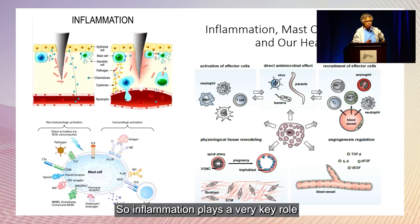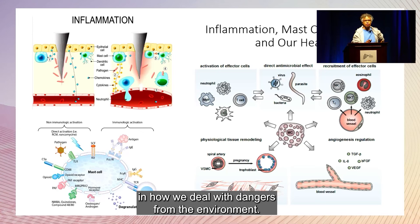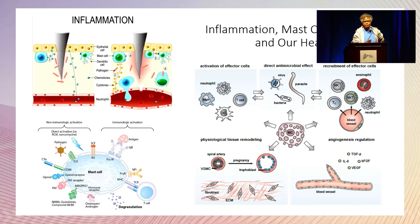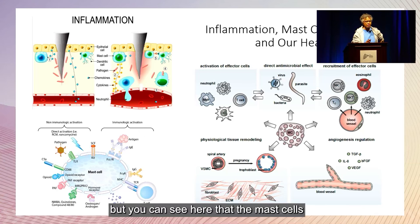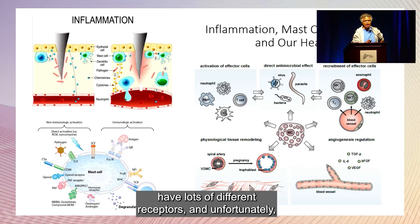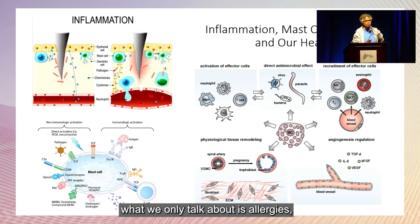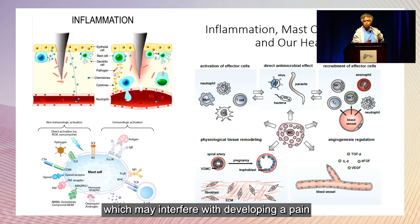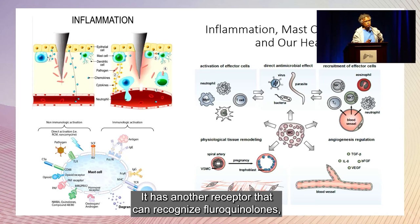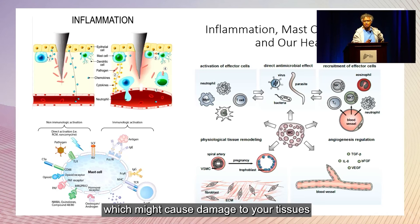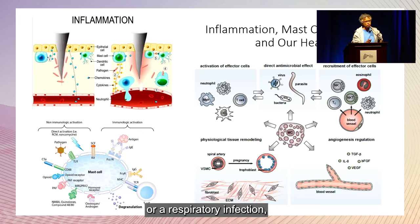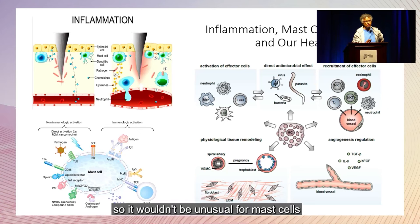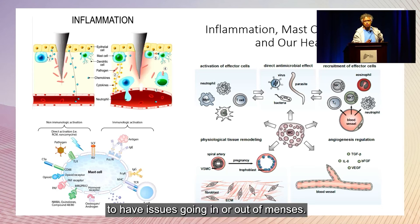Inflammation plays a very key role in how we deal with dangers from the environment. We have lots of different cell types responsible for that, but mast cells have lots of different receptors. Unfortunately, what we only talk about is allergies, which is going through just one of those receptors. But mast cells actually have opioid receptors, which may interfere with developing pain resistance to common analgesics. They also have a receptor that can recognize fluoroquinolones — which might cause tissue damage if taken for a urinary tract or respiratory infection — and chemical receptors that recognize estrogen, so it wouldn't be unusual for mast cells to have issues going in or out of menses.